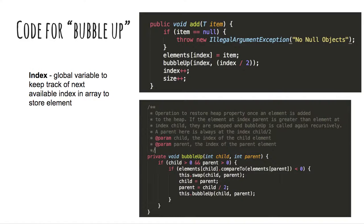Here is the Java code for bubbling up. In my add method, I use a variable called index, which is a global variable that keeps track of the next available index in array to store the element. Notice in my helper method bubble up, I use the concept of i divided by 2 to get to the parent.